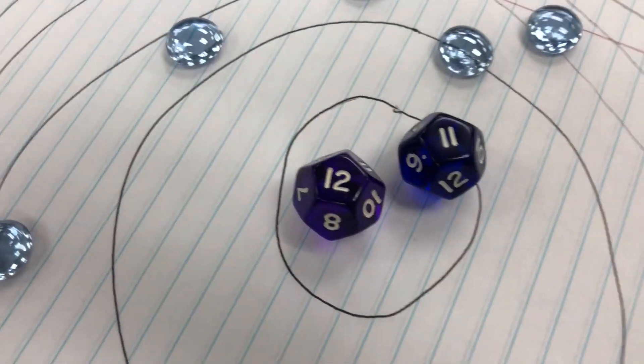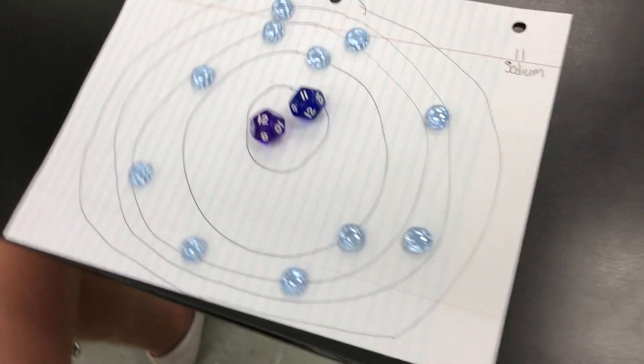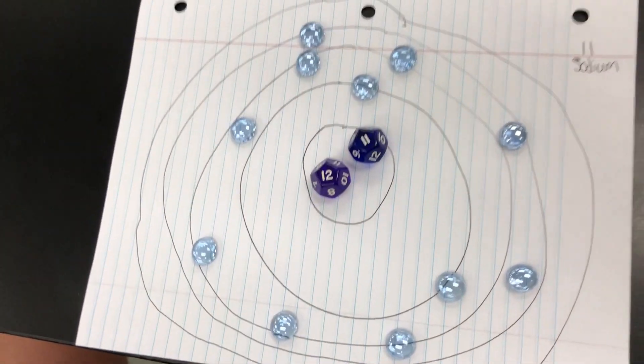Okay, so the 11 plus the 12 adds to 23, and then to neutralize those 11 protons you pulled in 11 negative electrons.